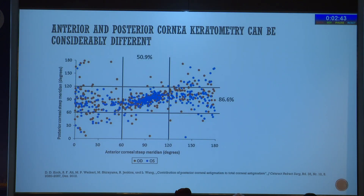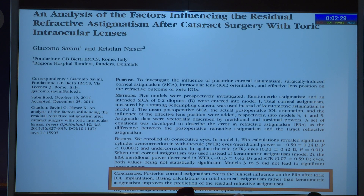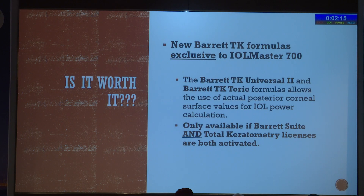The new total keratometry was established based on various studies by Koch et al., which showed that the posterior corneal curvature can significantly influence IOL power outcomes. This was also proved by the refractive residual astigmatism found after cataract surgery with TORIC intraocular lenses, as shown by Dr. Savini. Various other studies proved the same, and so we wanted to see if there was any difference between the Barrett Universal 2 versus the TK formulas.